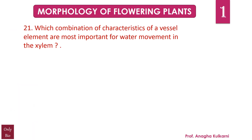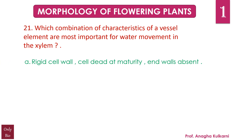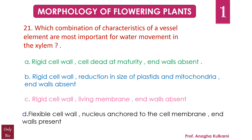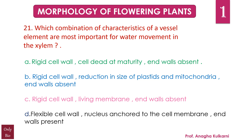Question number 21. Which combination of characteristics of a vessel element are most important for water movement in xylem? A. Rigid cell wall, cell dead at maturity, end walls absent. B. Rigid cell wall, reduction in size of the plastids and mitochondria, end walls absent. C. Rigid cell wall, living membrane, end walls absent. D. Flexible cell wall, nucleus anchored to the cell membrane, and end walls present.